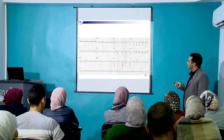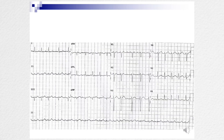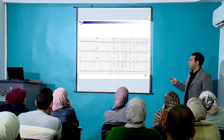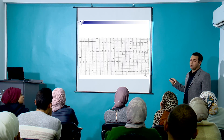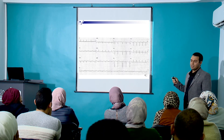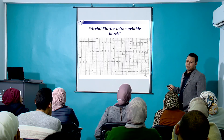Narrow complex, irregular, tachycardia — P waves. What's this? Can you count more than three different shapes? No — they all look the same. So this is not MAT. This is atrial flutter with variable block, i.e., atrial flutter with variable conduction.